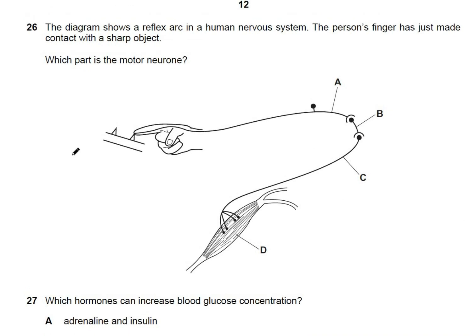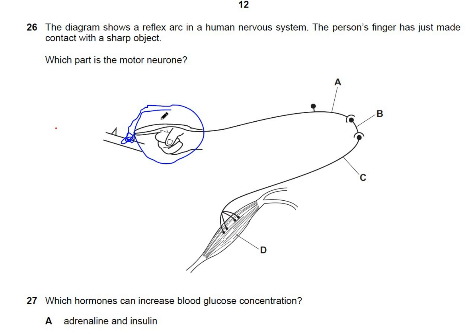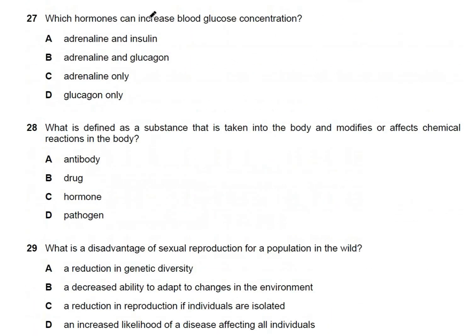Question 26: a reflex arc diagram shows a person's finger touching a sharp object. The stimulus travels via the sensory neuron to the intermediary neuron in the spinal cord, and then through the motor neuron to the muscle to withdraw the finger. The motor neuron in this diagram is C.